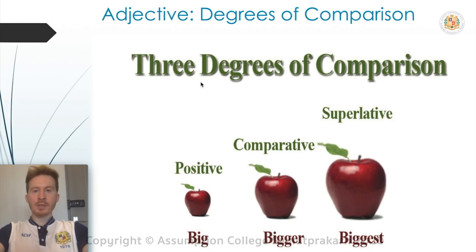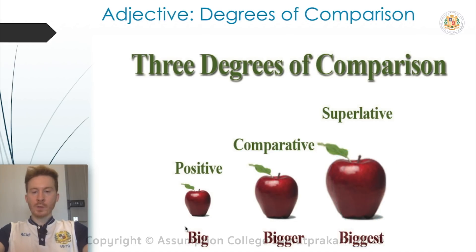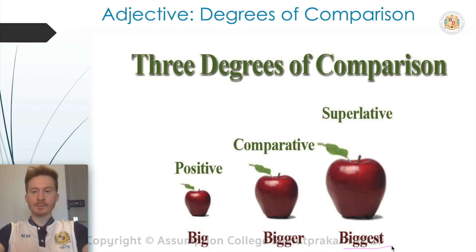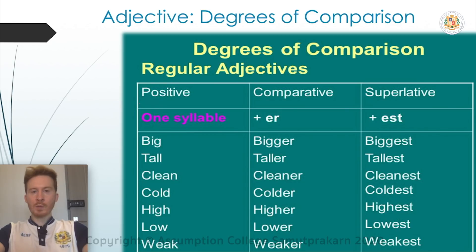With adjectives, we have three degrees of comparison: the positive, the comparative, and the superlative. For example: 'This apple is big. This apple is bigger. But this apple is the biggest.' In the degrees of comparison, when we have a positive one-syllable adjective, we add ER to make the comparative, and we add EST to make the superlative.